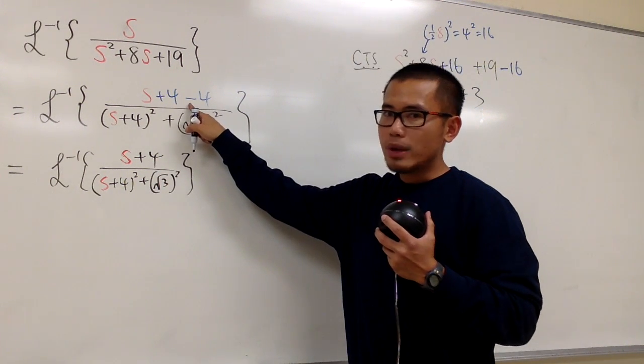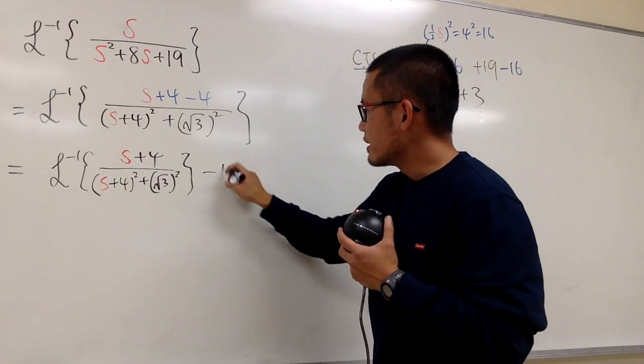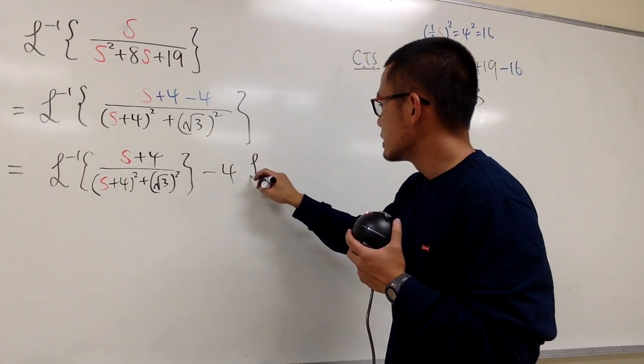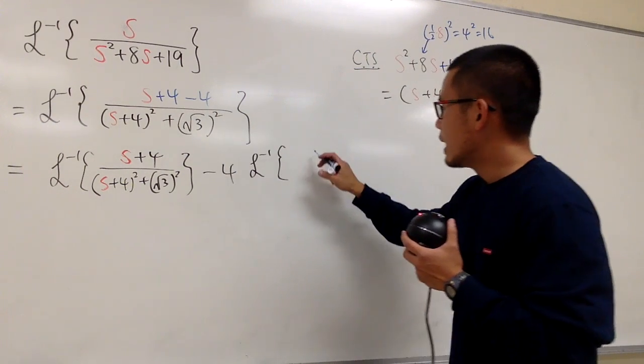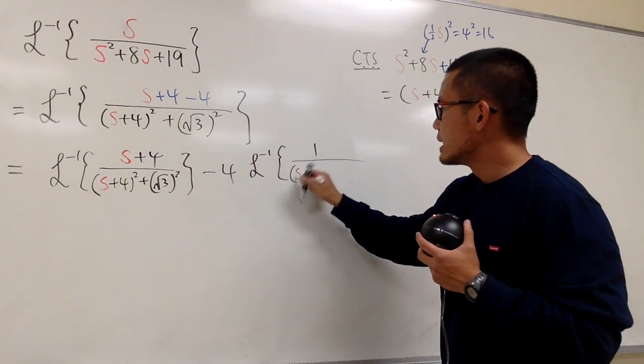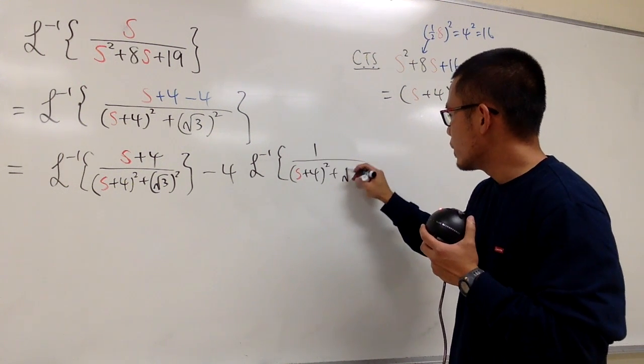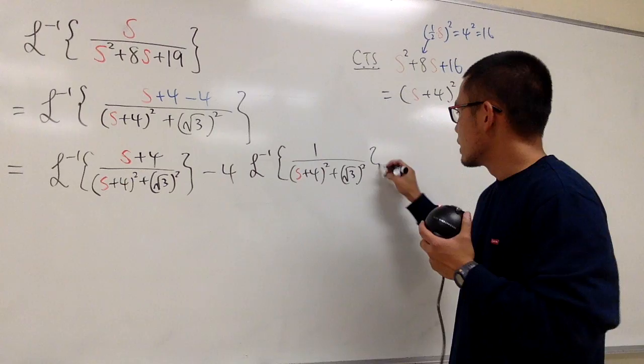And the next one is going to be minus 4, and then let me just take the negative 4 to the front. Negative 4, and then the inverse Laplace like this. On the top now I just have a 1 over this right here, which is s plus 4 squared, and then once again plus square root of 3 squared.